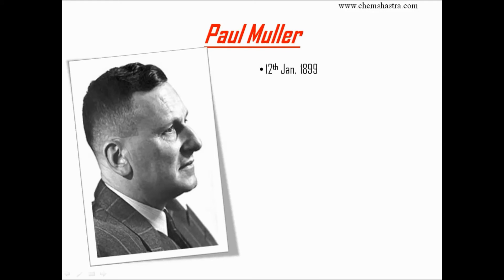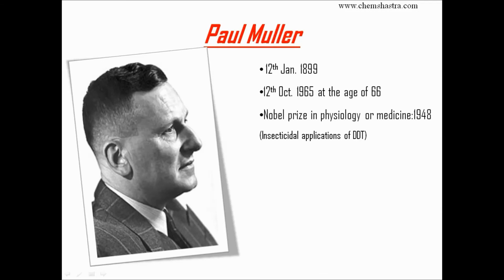The next scientist is Paul Müller. He was born on 12 January 1899 and died on 12 October 1965 at the age of 66. He received the Nobel Prize in Physiology or Medicine in the year 1948. The reason he was awarded this prize was for exploring the insecticidal application of DDT.